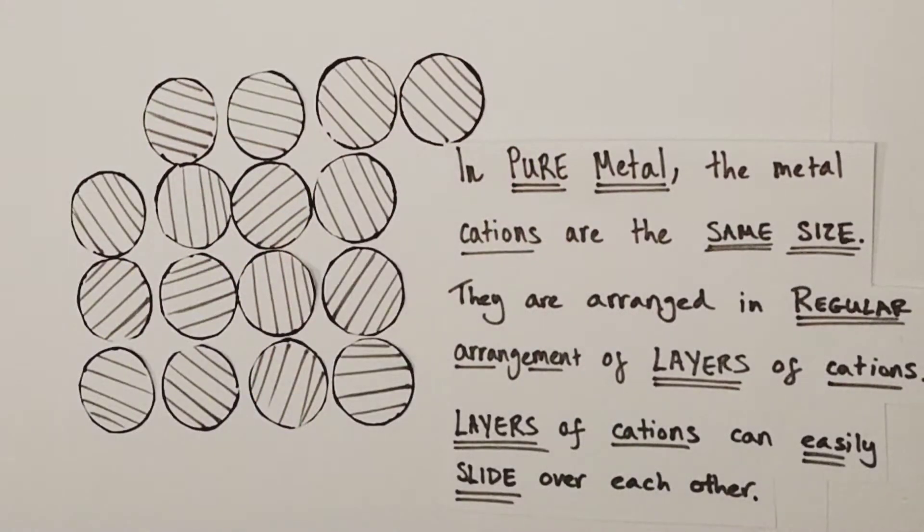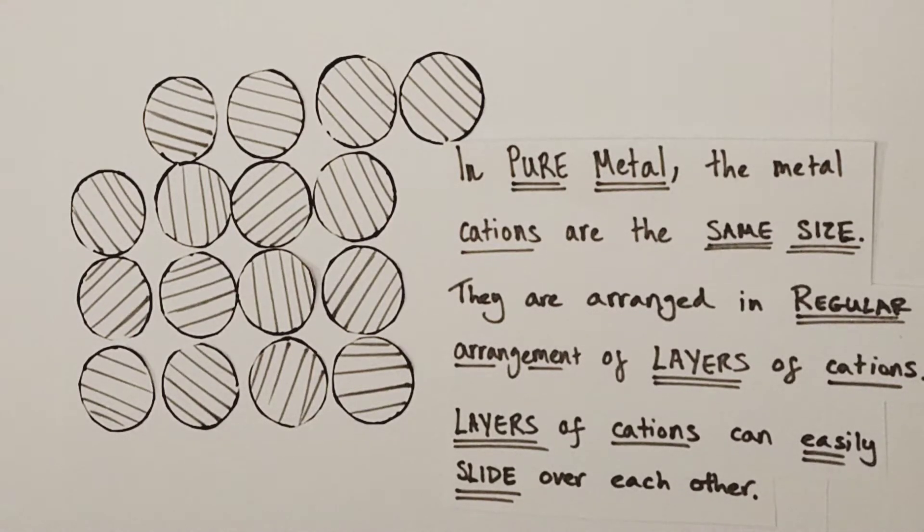This is what makes metals both malleable and ductile, meaning that pure metals can be easily moulded and bent into new shapes without breaking or snapping, unlike other brittle structures which snap under shearing forces.